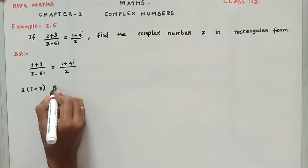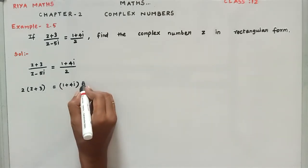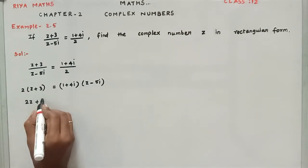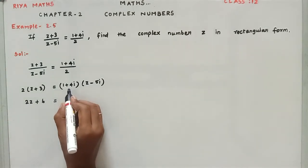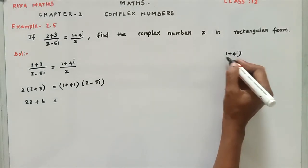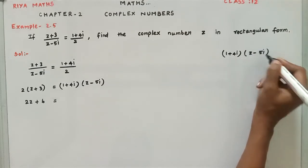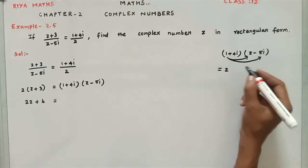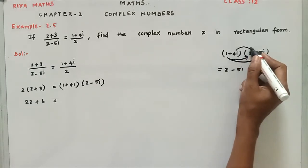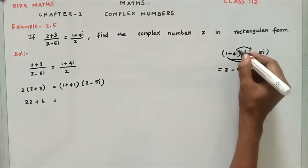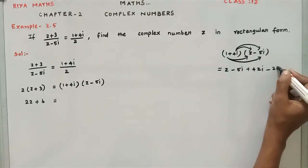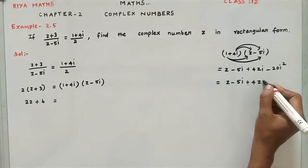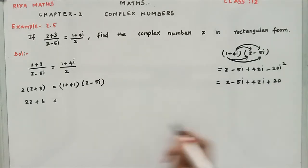So 2(z + 3) = (1 + 4i)(z - 5i). Multiplying the 2 inside: 2z + 6 = (1 + 4i)(z - 5i). Expanding the right side: 1 into z is z, 1 into -5i is -5i, plus 4i·z is 4zi, minus 20i² which equals +20. So the right side is z - 5i + 4zi + 20.